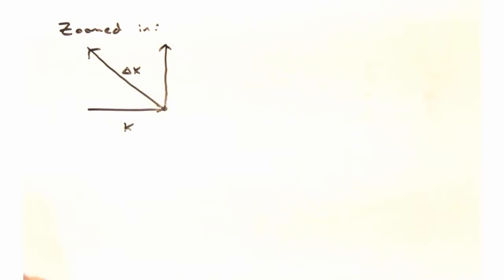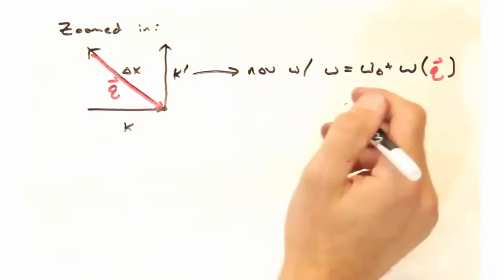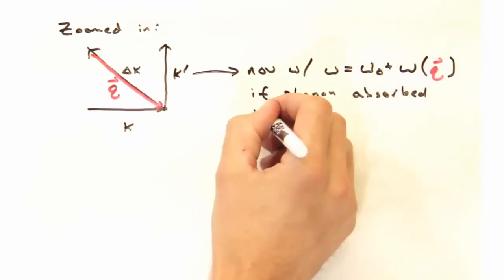So let's zoom in then a little closer on this origin and take a look at k and k prime and the associated delta k. So now let's consider the case of a phonon being absorbed by that incident red light. When the phonon is absorbed by the light, the frequency at k prime is now going to be the original frequency, omega0, plus the frequency of this particular q vector.